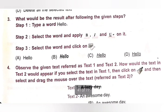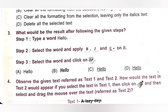Third question: What would be the result after following the given steps? Step 1: Type the word Hello. Step 2: Select the word and apply bold, italic and underline on it. Step 3: Select the word and click on Clear Formatting. When you apply the Clear Formatting option on the text as instructed in step 3, it clears all the previously applied formatting — bold, italic and underline — hence leaving only the plain text. Option A is the correct answer.